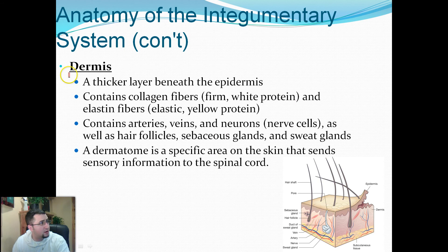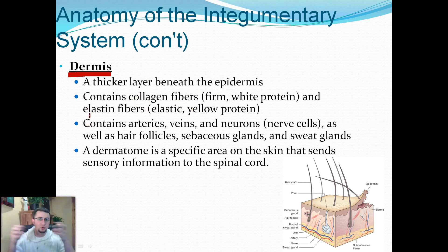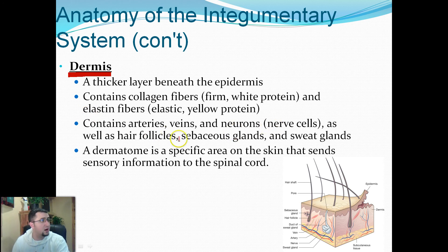The next layer is the dermal layer, otherwise known as the dermis. It's a thick, very spongy layer beneath the epidermis. It contains collagen fibers and elastic fibers that allow it to be stretchy and squishy. There are also a lot of arteries, veins, and nerve cells, as well as hair follicles, sebaceous glands, and sweat glands — all anchored in the dermal layer.